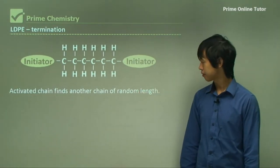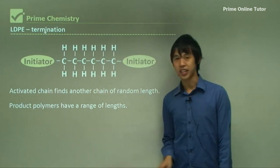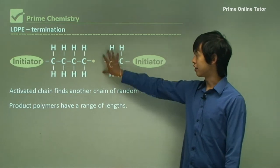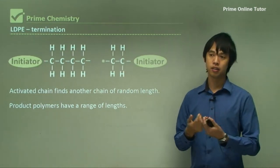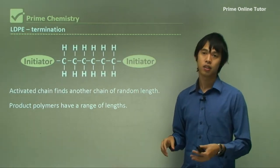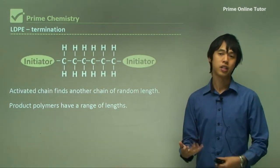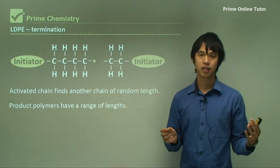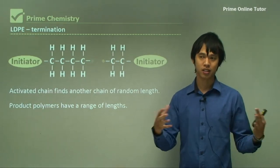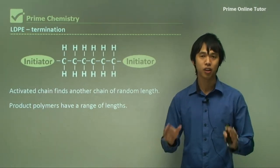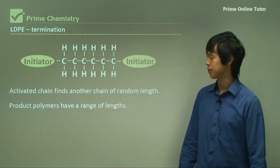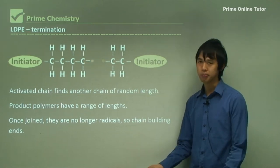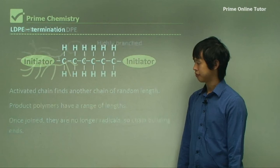The product polymers have a range of lengths because of this randomness — if the terminating chain happened to be 20 carbons long, you'd get a 22-carbon chain. Everything isn't going to be exactly the same, which is something we have to deal with. Once joined, there are no more radicals, so no more chains can form.